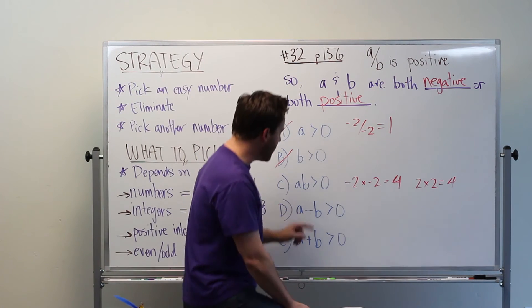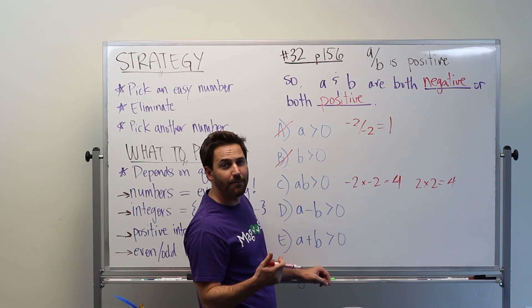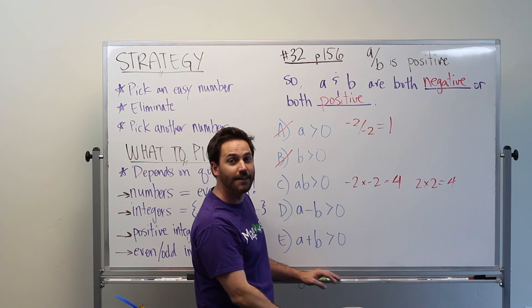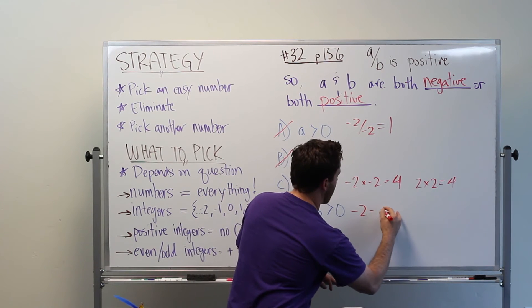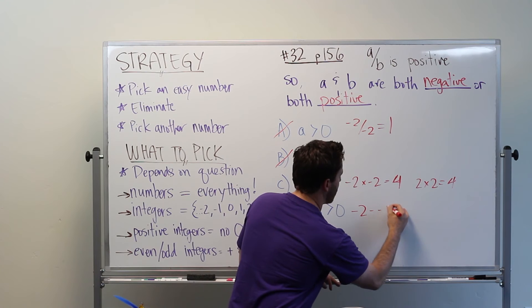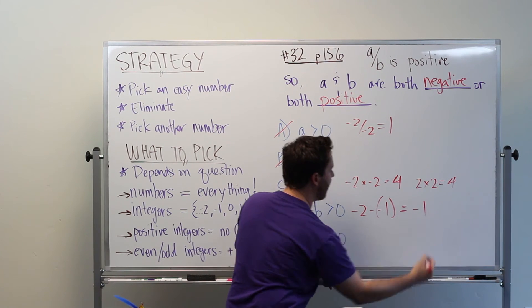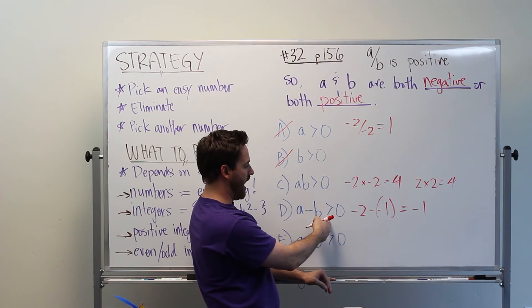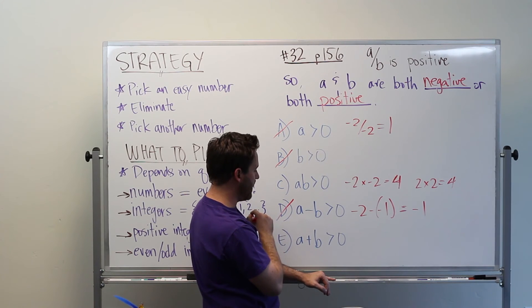So A minus B is greater than zero. Again, I'm going to stick with my negative numbers. It seems to yield a lot of useful information for eliminating answer choices here. So I could say negative two minus negative one, and that's going to equal negative one. So this is not greater than zero. So we can eliminate this.